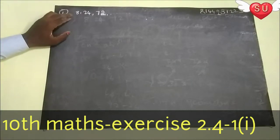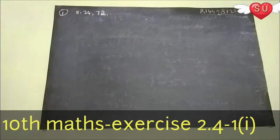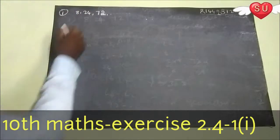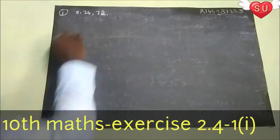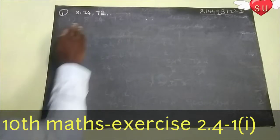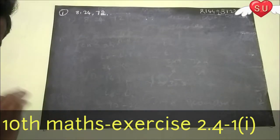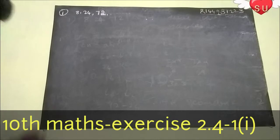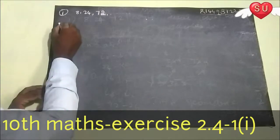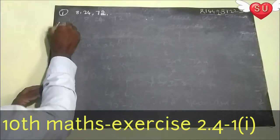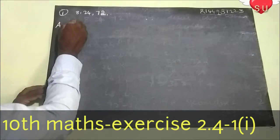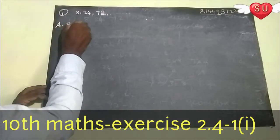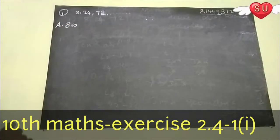The first question gives the sequence: 8, 24, 72. First, we will find whether the next terms form a geometric sequence or arithmetic sequence. I will check the arithmetic sequence.